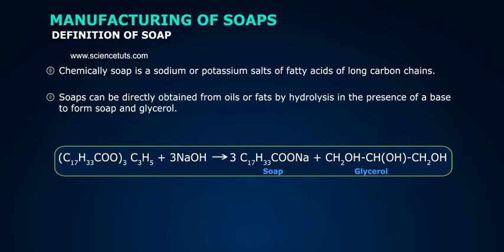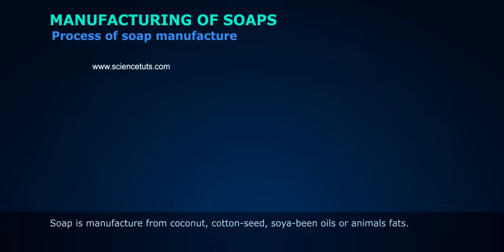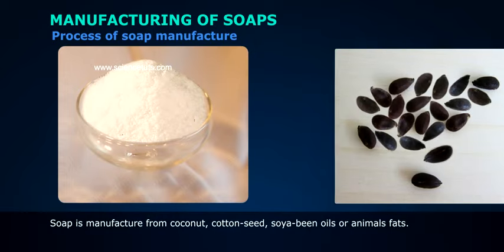C17H33COO taken thrice plus C3H5 plus 3NaOH yields C17H33COONa plus CH2OH CH2OH CH2OH. Process of Soap Manufacture: Soap is manufactured from coconut,